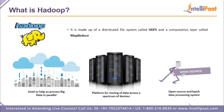Hadoop is an open source batch processing system provided by Apache Software Solutions. It helps in processing large amounts of big data and is one of the most important tools under the entire umbrella of big data handling. It has its own method of storing files called the Hadoop File System, and to perform computations it uses something called MapReduce. Importantly, Hadoop can work with data in parallel across many machines simultaneously.